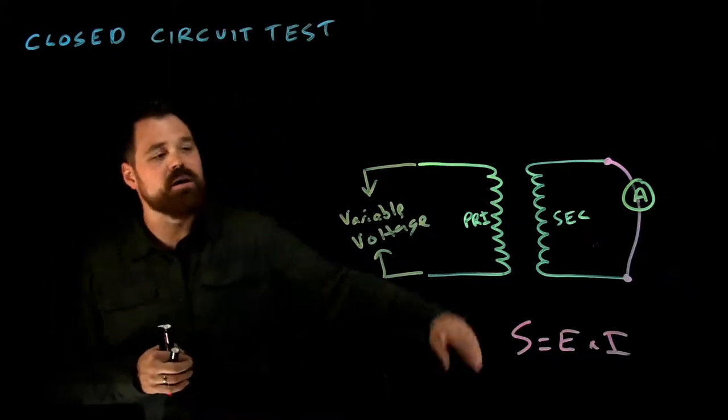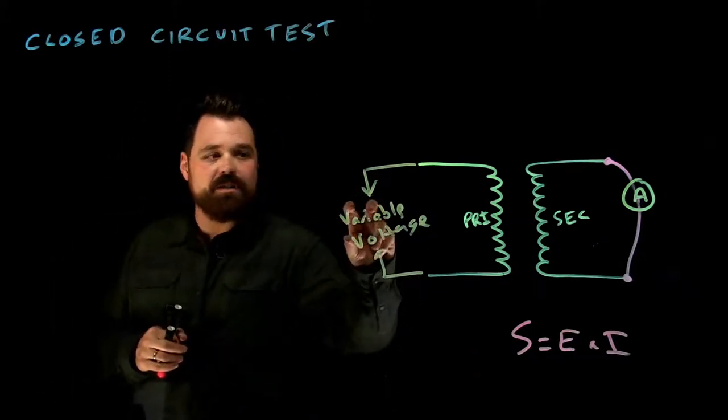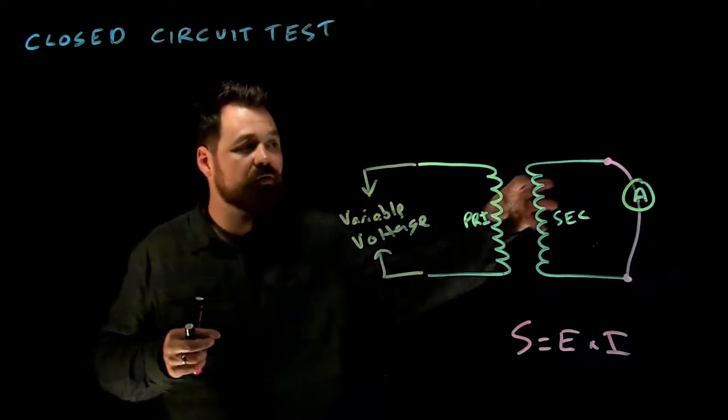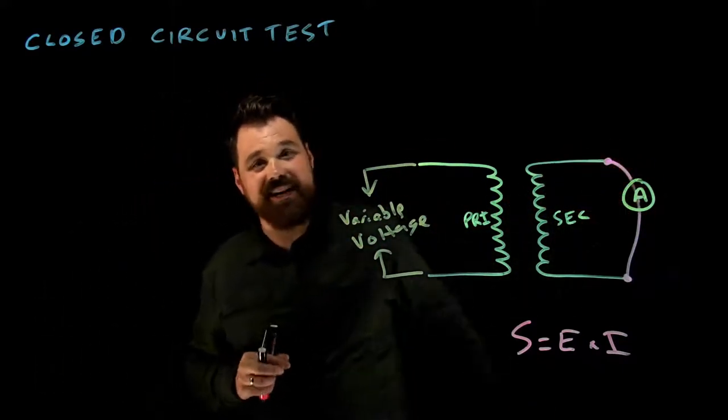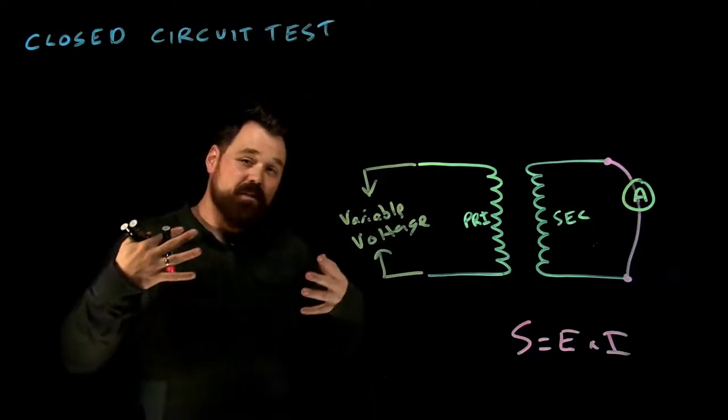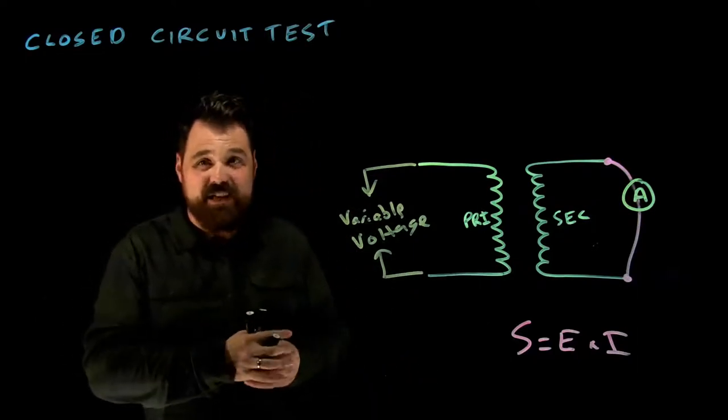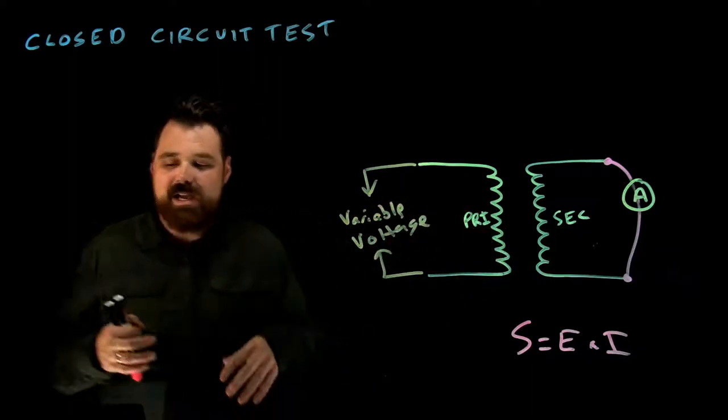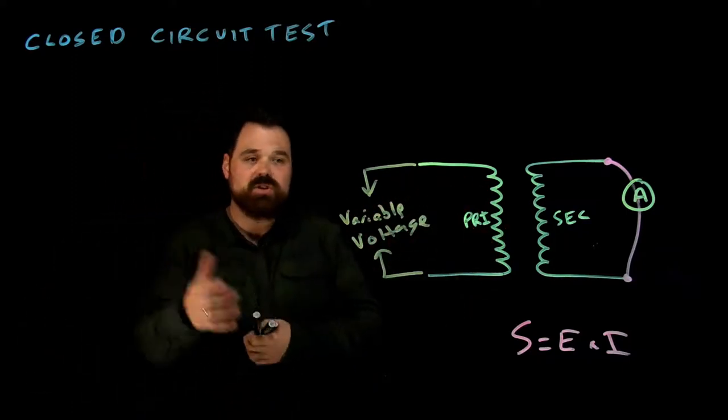Now, what we do with that number is slowly increase the voltage until it energizes the core enough to reach that rated current on the secondary. You're looking at a percent IZ there - the percent of your rated voltage required to achieve that. That is what a short circuit test does.